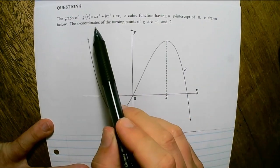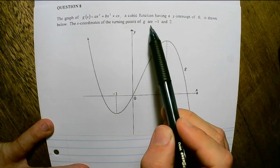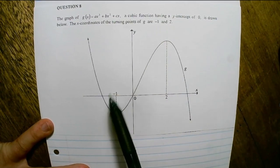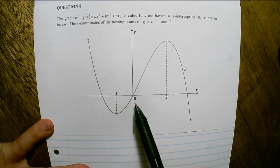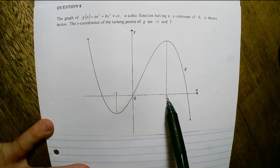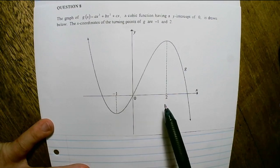The x coordinates of the turning points of g are negative 1 and 2. So here we have the y-intercept going through 0, and negative 1 and 2 are identified as turning points or stationary points.